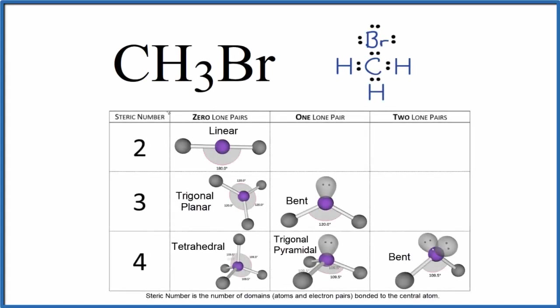In this video we'll look at the molecular geometry for CH3Br. This is called bromomethane. So we start with the Lewis structure, and here we can see the carbon has four things attached to it, so we're looking at the molecular geometry from the perspective of the carbon.